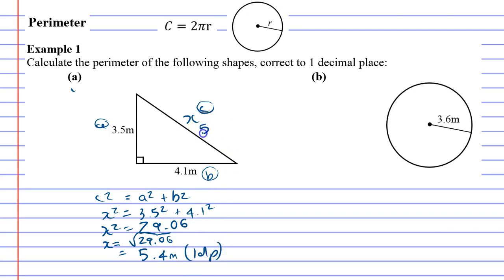Now all that does is it just tells us the length of the third side. We then need to find the perimeter by adding up each side.